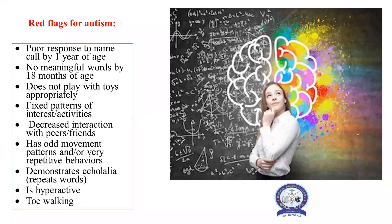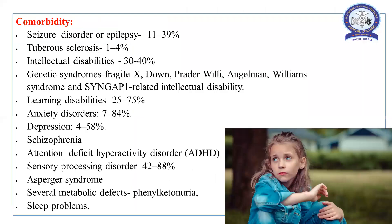These are the red flag signs for autism that every parent, teacher, and pediatrician should notice. They include: poor response to name called by age one year; no meaningful words by age 18 months; not playing with toys appropriately; a fixed pattern of interest or activities; decreased interaction with peers, friends, and family; odd movement patterns or very repetitive behaviors; echolalia (repetitive words); and sometimes hyperactivity.